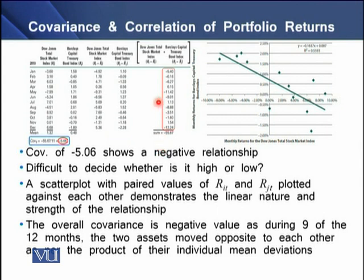If we observe the multiplications of the mean deviations, we can see that we have 9 negative values out of 12 total values. This means that during 9 of the 12 months, the two assets moved in opposite directions relative to their individual means. This clearly indicates a negative covariance between these two different assets.